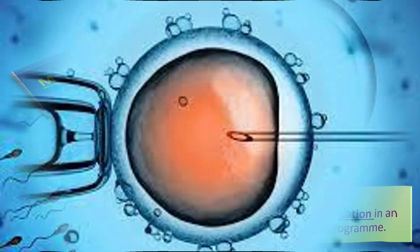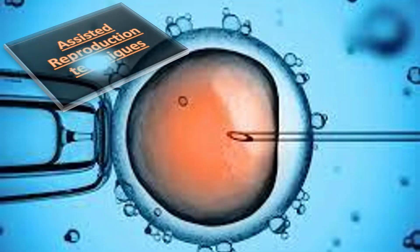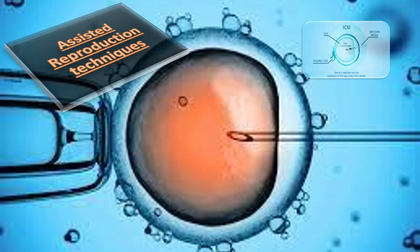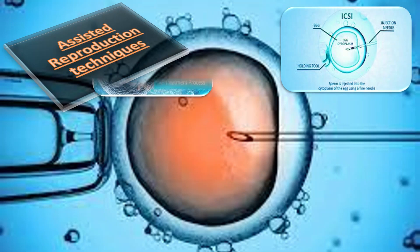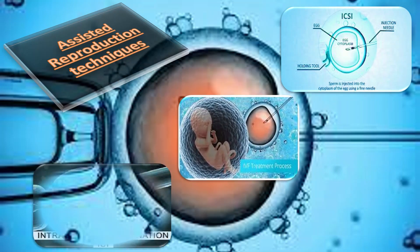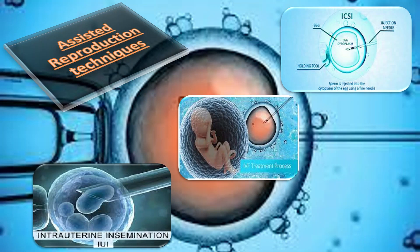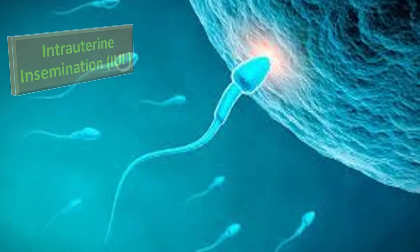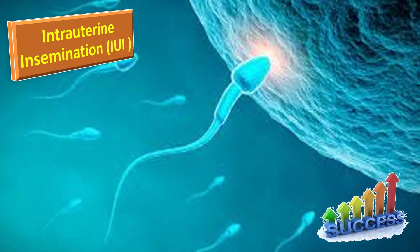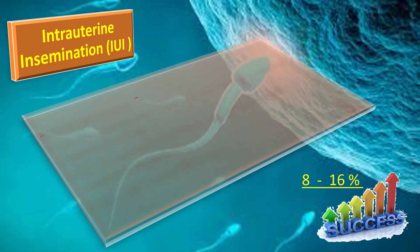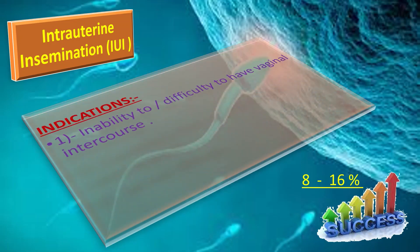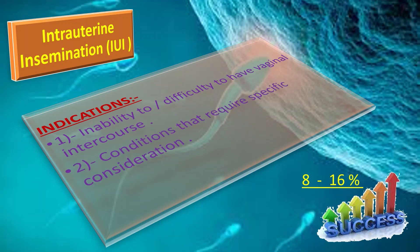Which assisted reproduction techniques are available according to sperm counts? The options are: ICSI — intracytoplasmic sperm injection; IVF — in vitro fertilization; and IUI — intrauterine insemination. IUI has a success rate of about 8 to 16%. Indications include inability or difficulty having vaginal intercourse, and conditions requiring specific consideration such as sperm washing where the man is HIV positive, and also in cases of semen allergy.